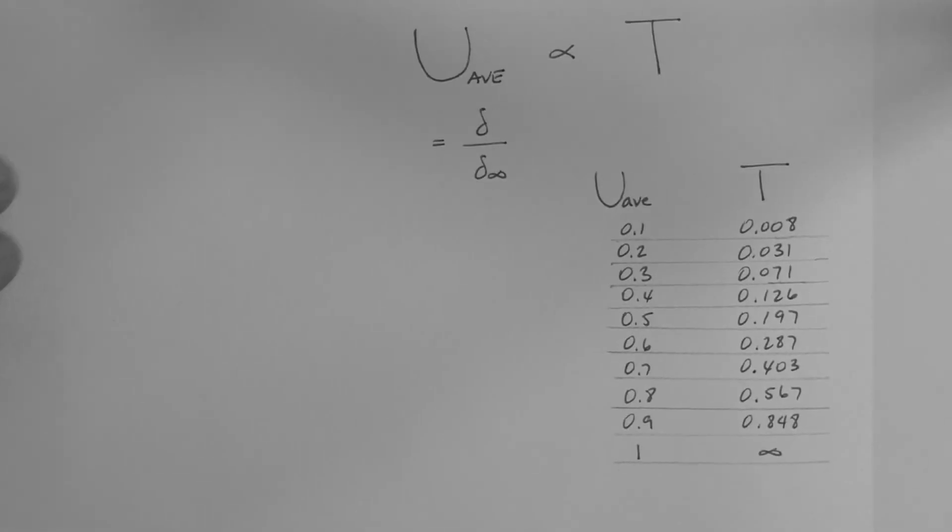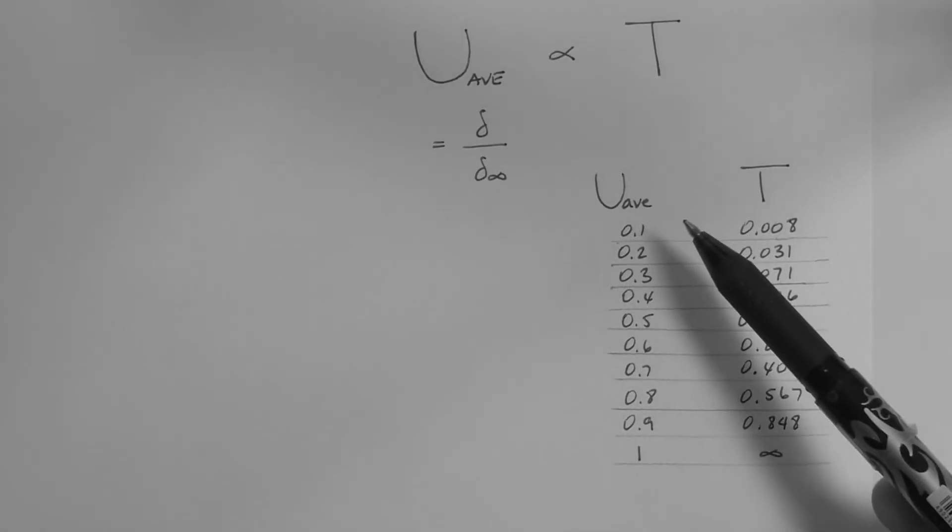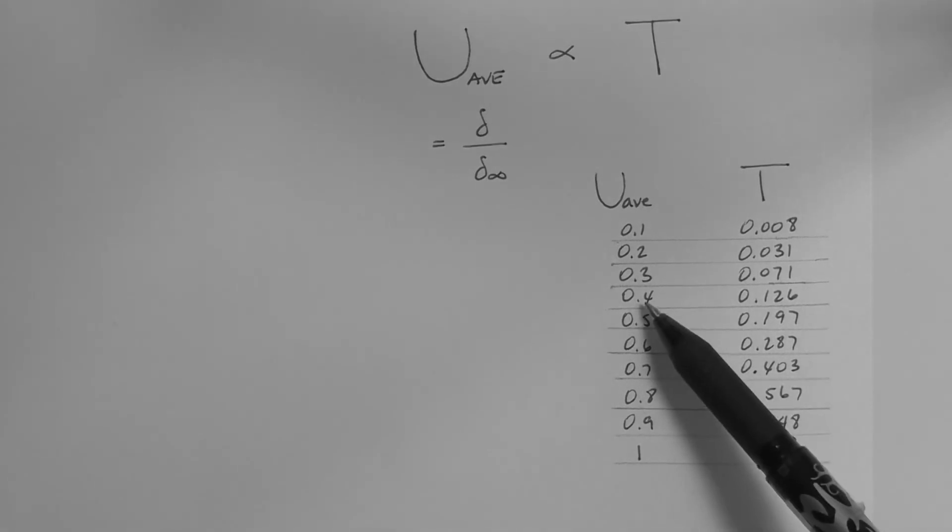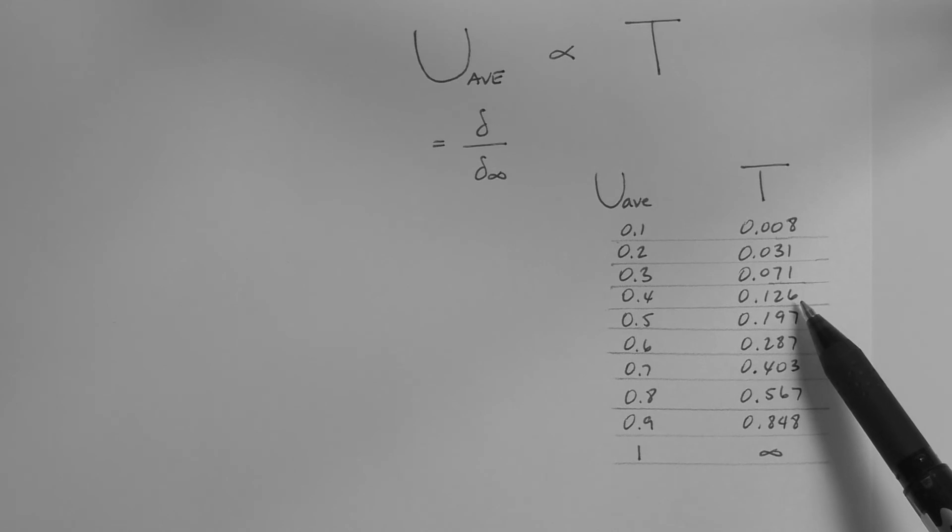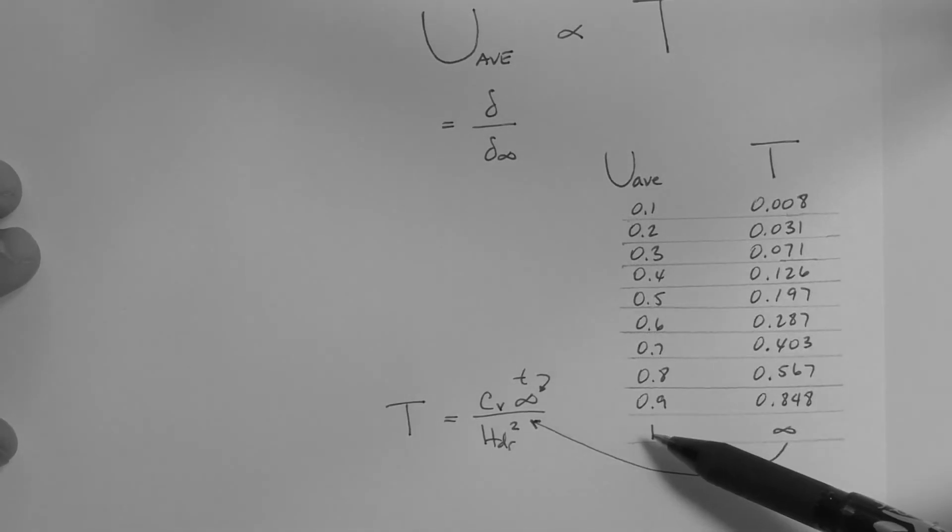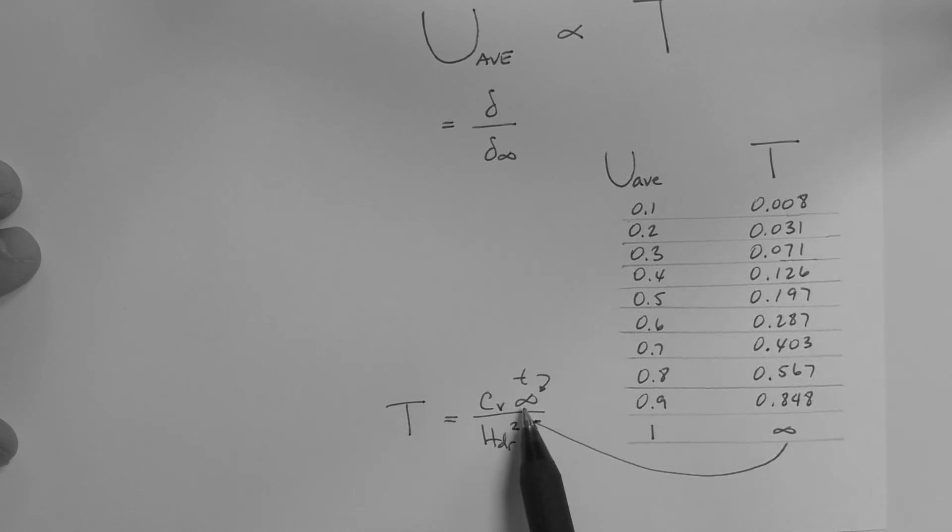Here is the table. So for any given value of the average degree of consolidation, for example 40%, we can get the associated value of the time factor. The average degree of consolidation tends to 1 as time tends to infinity.